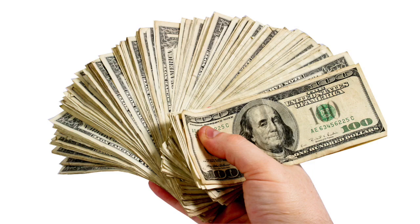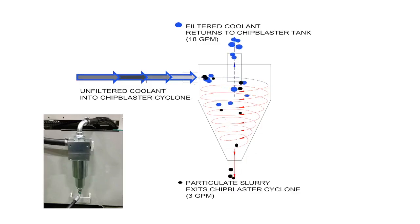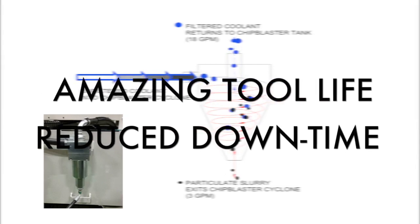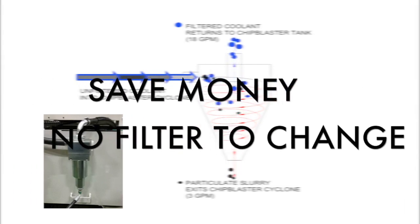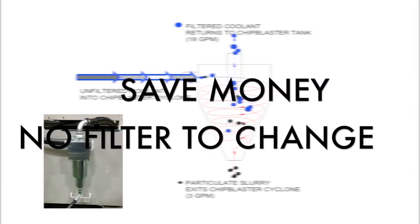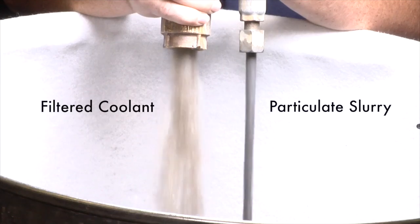Do you want to save tons of money? Of course you do. Customers using Chip Blaster's cyclonic filtration are getting amazing tool life, experiencing reduced downtime, and saving tons of money by not changing filters. It's easy to see how filtering to two microns makes a huge difference.